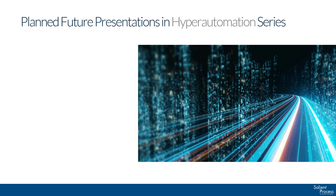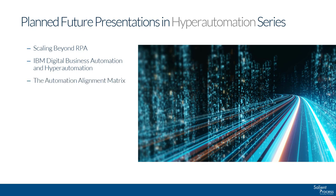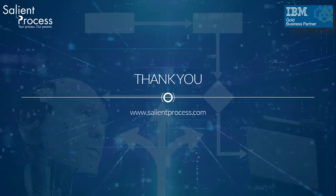As we mentioned at the start of this presentation, this is the first in a series. We'll follow this with presentations about how you can scale beyond RPA to reach hyper automation, leveraging IBM Digital Business Automation to do hyper automation, how you can align the right automation tools with the right type of work, and discuss the strategies that will allow you to navigate the hyper automation roadmap. Thank you very much for taking time out of your busy schedule to view this presentation. I'm Brian French with Salient Process — we help you give yourself the freedom to be great.